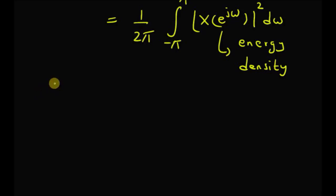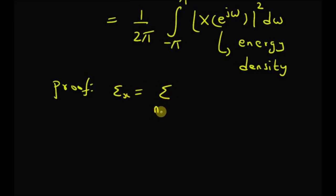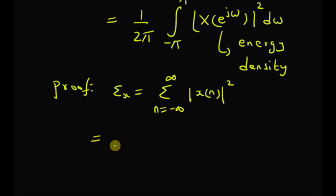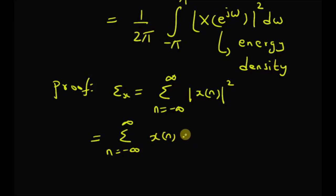Now let us look at the proof. Starting with the definition of the energy, that is Ex is equal to the sum from n equal to minus infinity to plus infinity of the absolute value of the signal x of n squared. This can be rewritten as the summation from n equal to minus infinity to plus infinity of x of n multiplied by its conjugate.